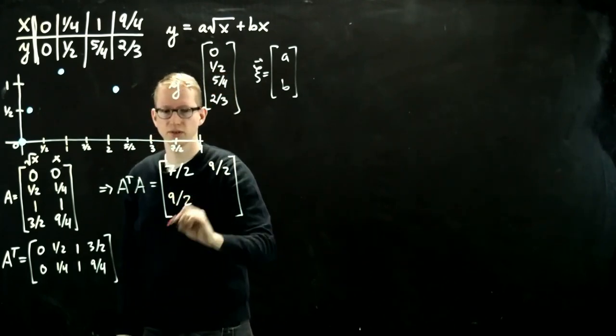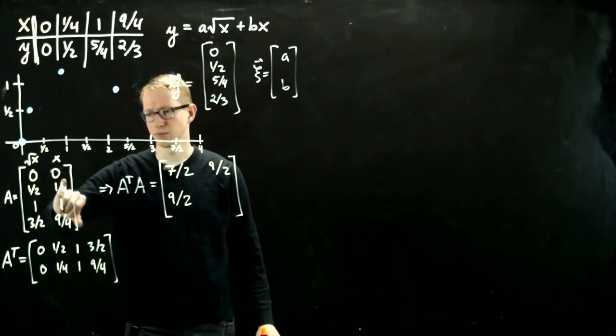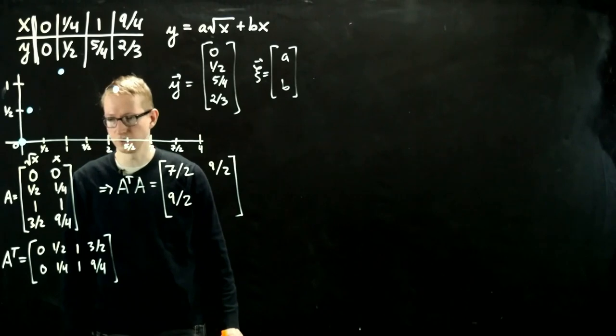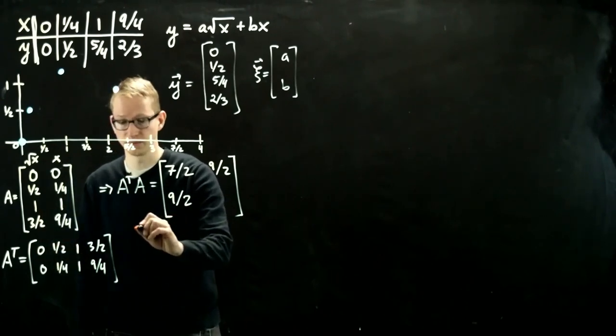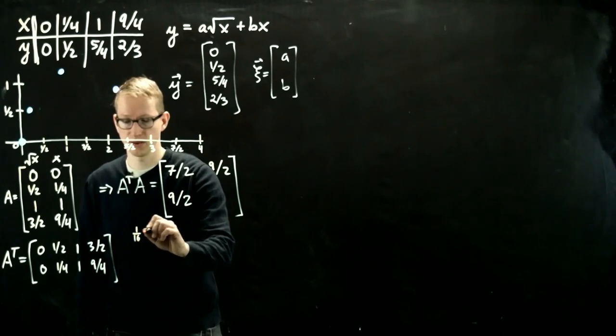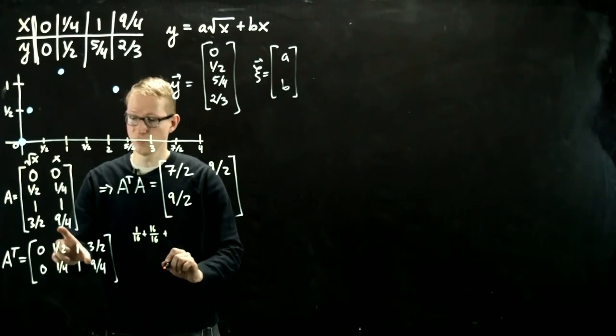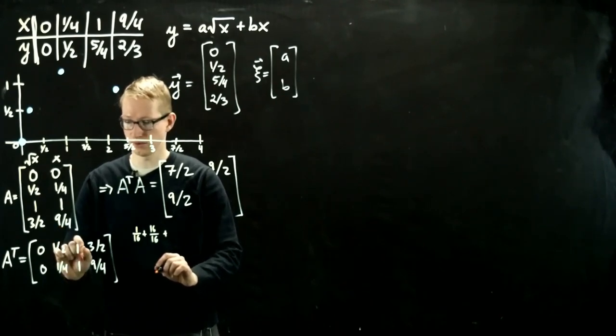This is going to be a symmetric matrix, so this is also 9 halves. And then the last term that we compute is the dot product of the second vector with itself. So that gives us 1 sixteenth plus 1, so I'll actually have to write this one out. So 1 sixteenth plus 1, which is 16 over 16, plus 81 over 16, if I did that correctly.